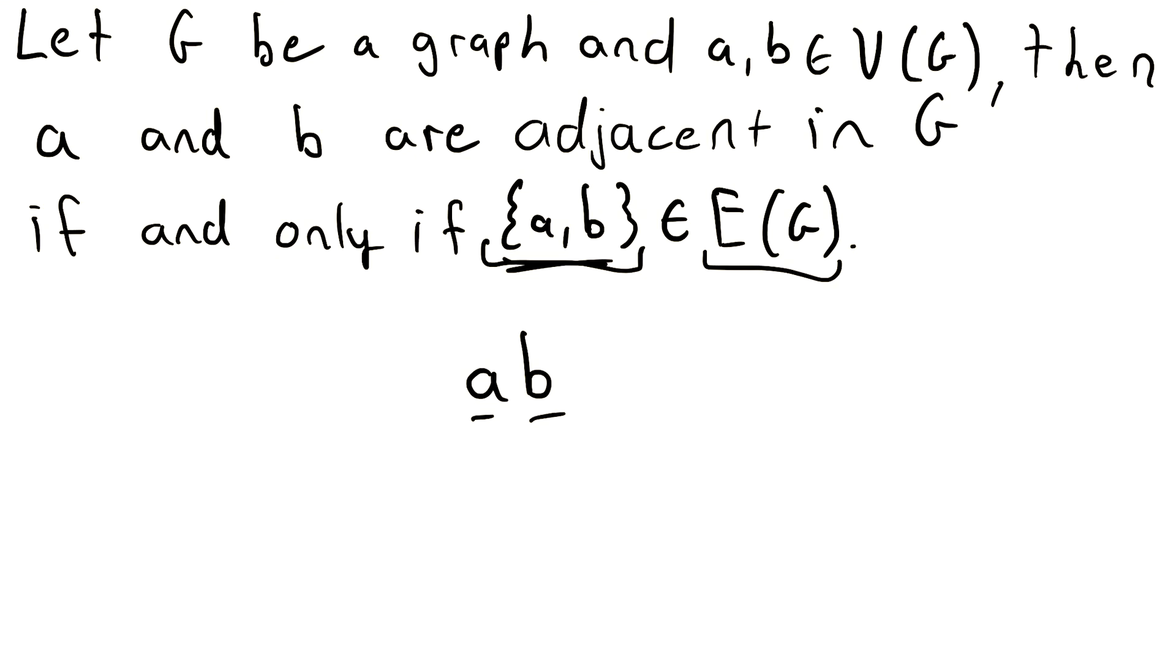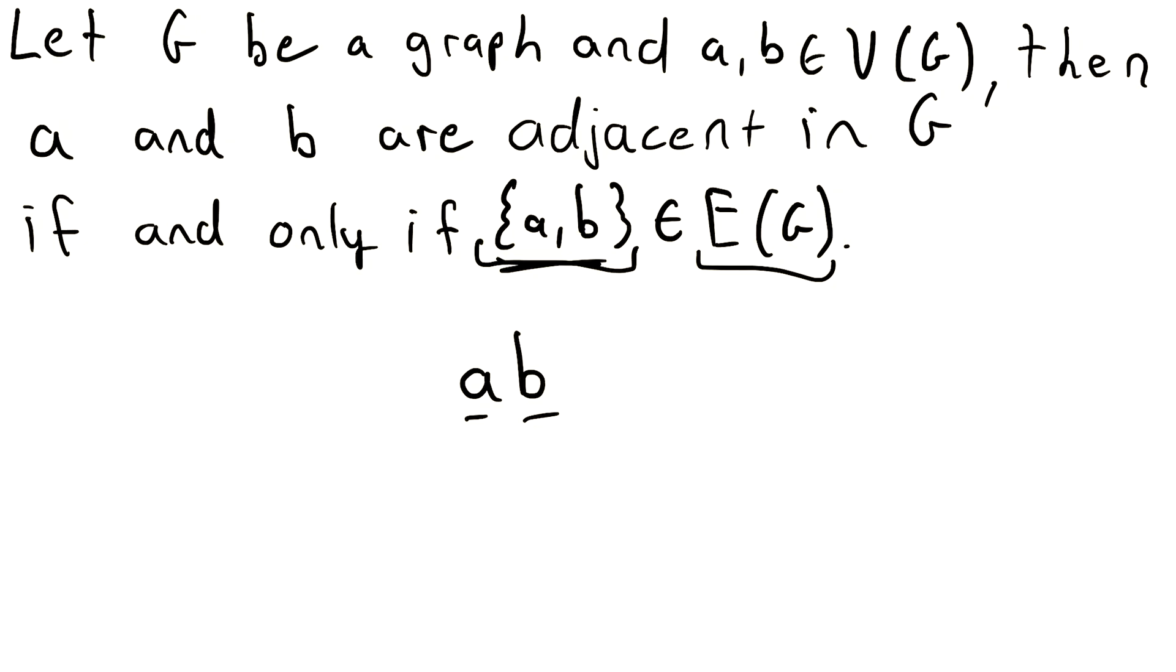And so that's the definition of adjacent vertices. Two vertices are adjacent in a graph if there is an edge in that graph joining those vertices. And that's really all there is to it.